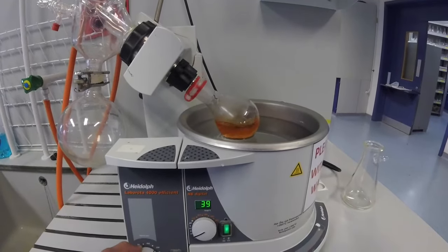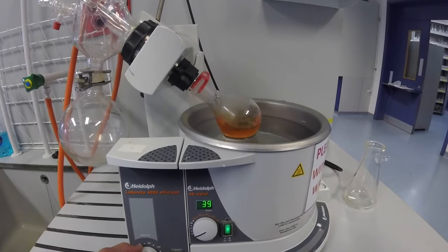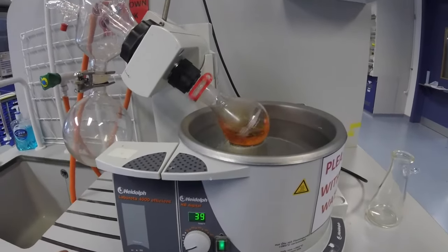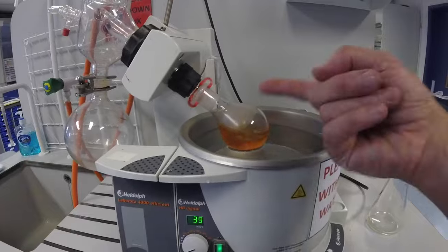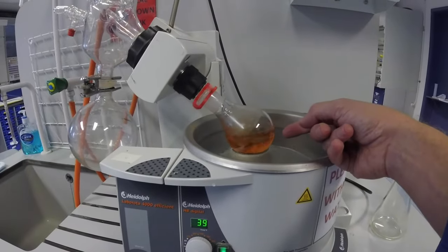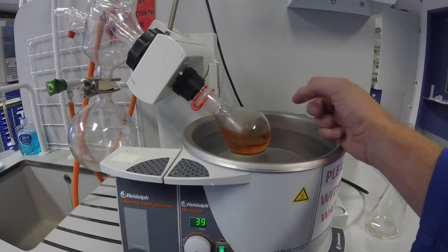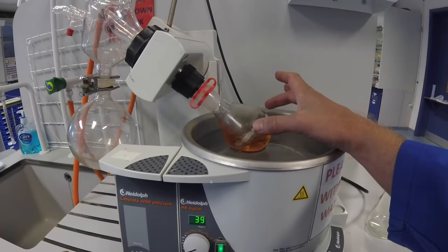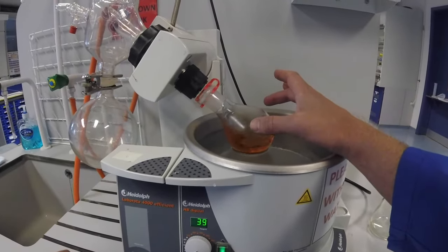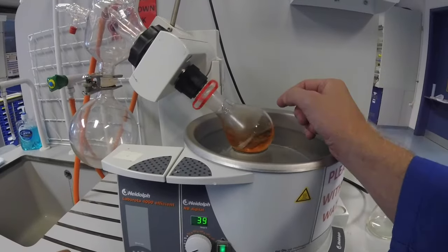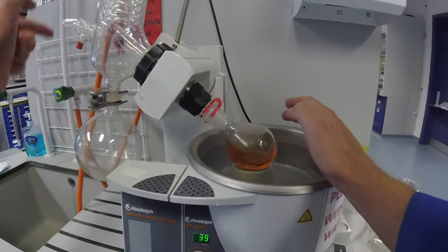We can turn up the speed. The reason why we're rotating the flask is to ensure that it increases the surface area as the solvent's rotated and flung out by centripetal force around the sides of the flask.